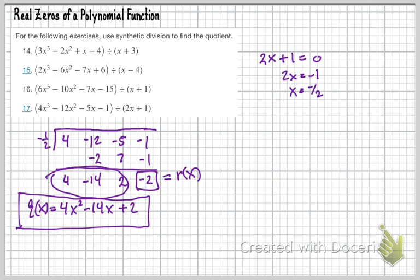Now if that turned out to be 0 there, then that 2x plus 1 would be a factor of 4x cubed minus 12x squared minus 5x minus 1. So there's our answer for this one here.